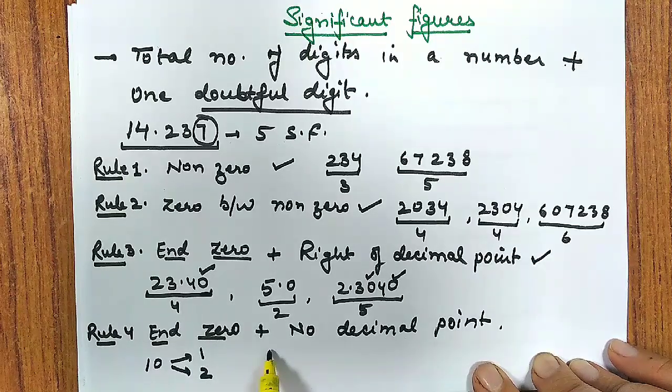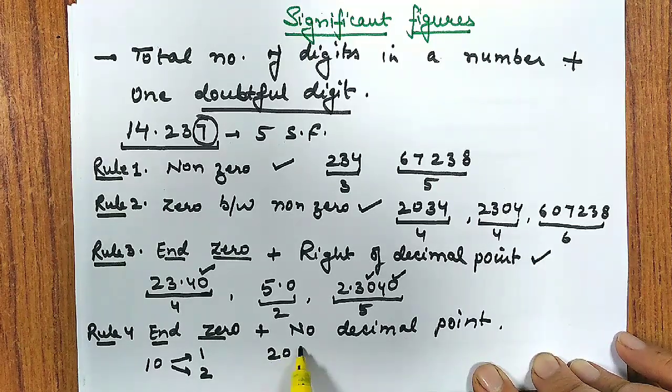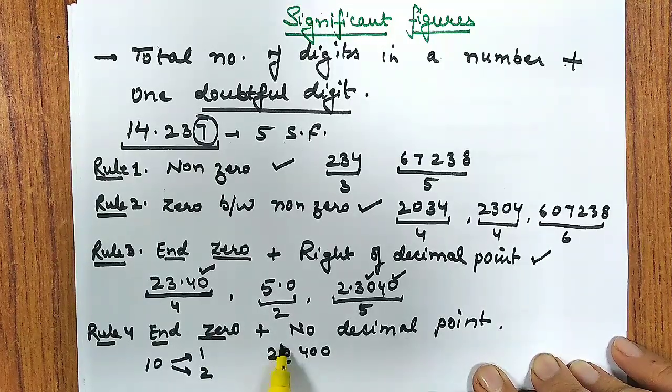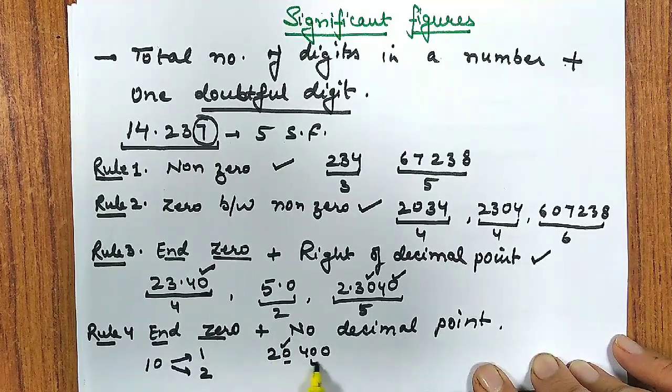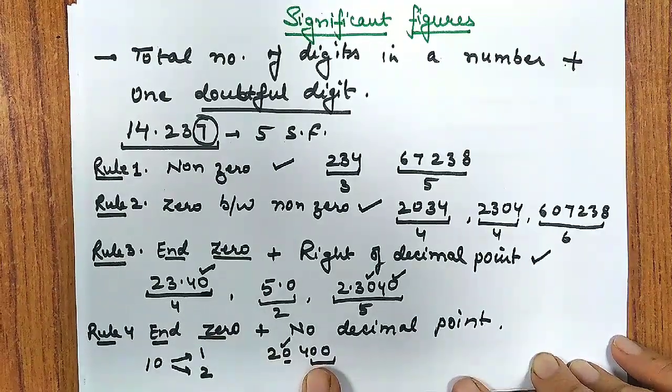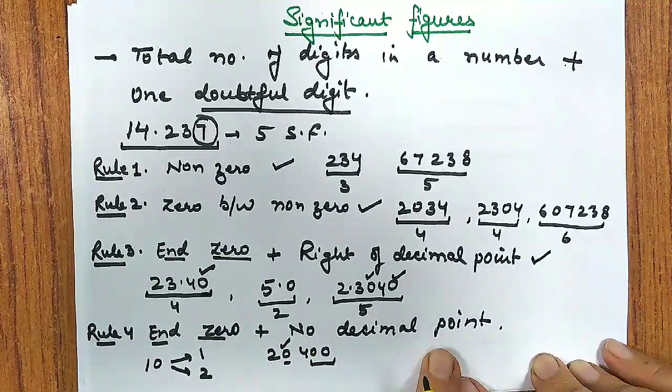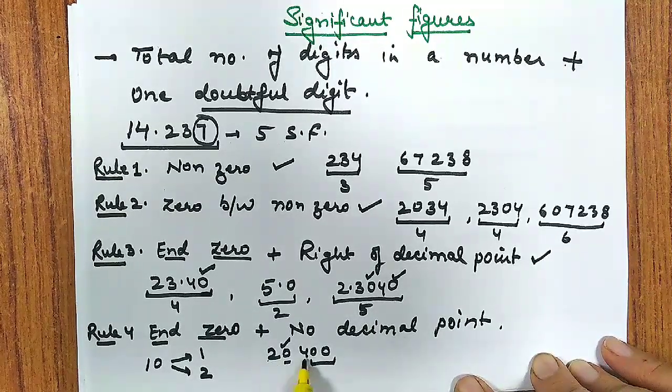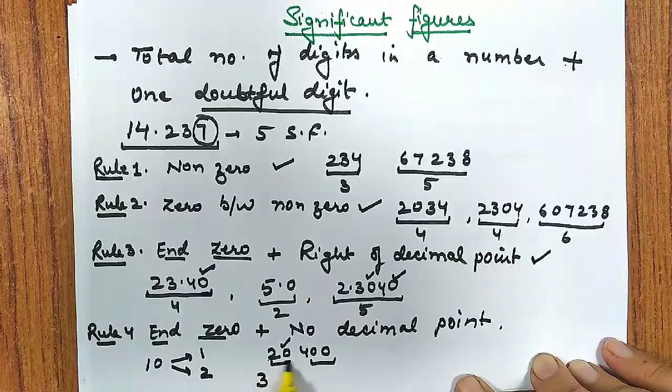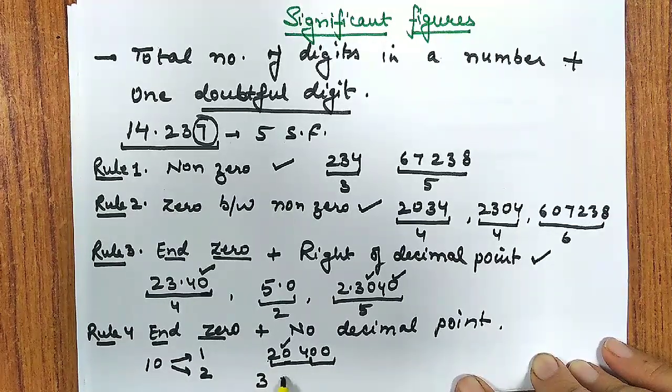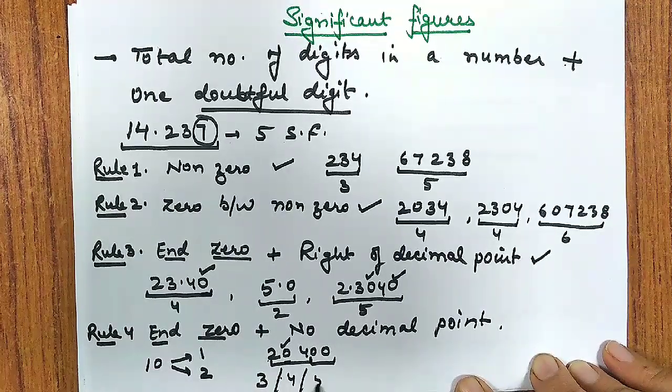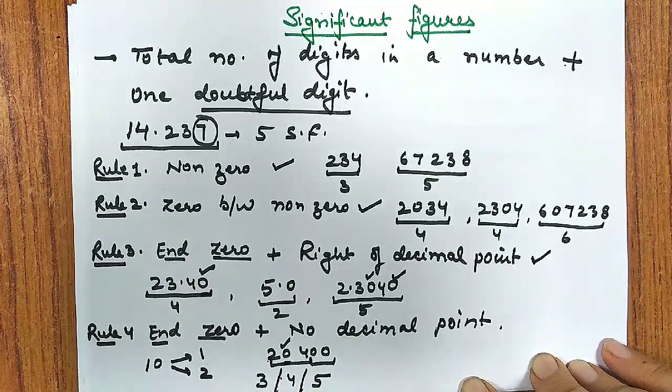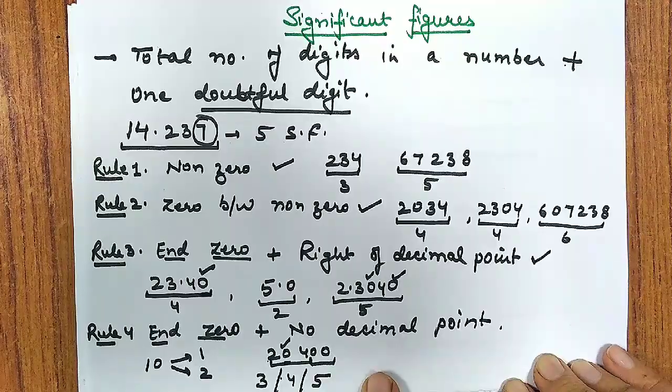If I take 5.0, it has two significant figures. If I take 2.3040, this zero between non-zero will be counted as per rule number 2, and this zero after decimal and at the end is also considered significant. So I will be having total 5 significant figures. Now again there is no problem in zero ending at the end plus it should be present at the right of decimal point.